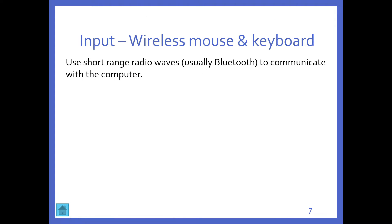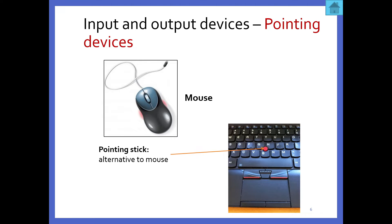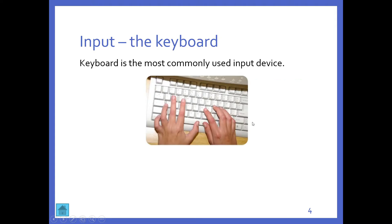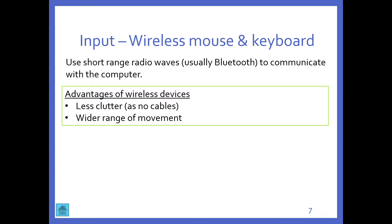We also have wireless versions of the mouse and keyboard, and they use short radio waves to communicate with a computer. With a wireless keyboard, you get a small device that plugs into your USB port and communicates wirelessly with your keyboard. You can move your keyboard around freely, and it means there's less clutter because you don't have cables.